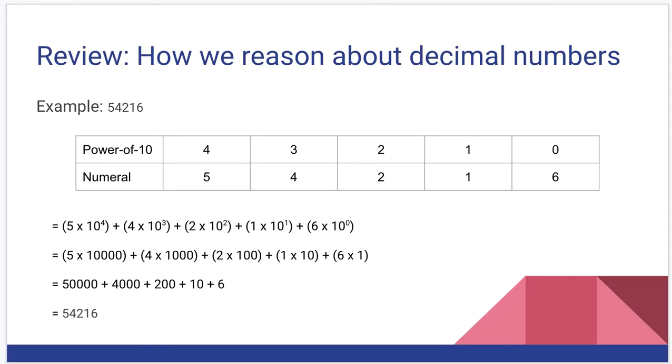All right, once again, let's review how we think about decimal numbers. The DEC prefix means 10, so decimal numbers are made up of the numerals 0 through 9. We have 10 numerals, and we can make combinations of those to make up our numbers. For example, 54216.